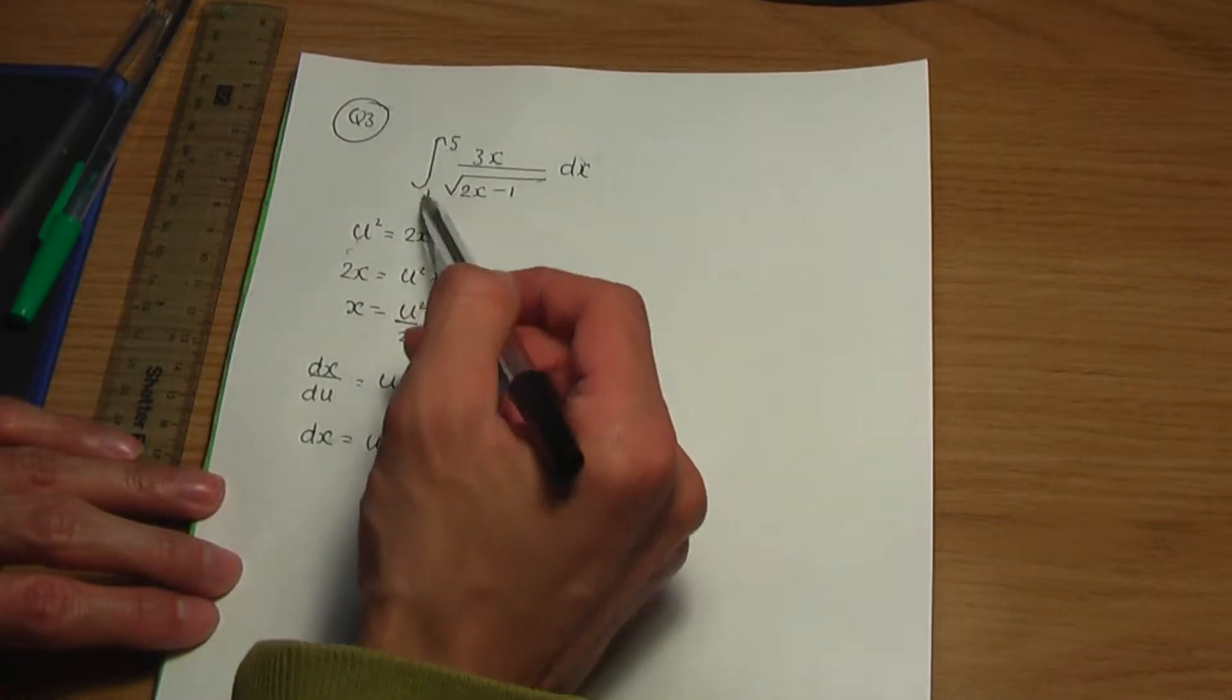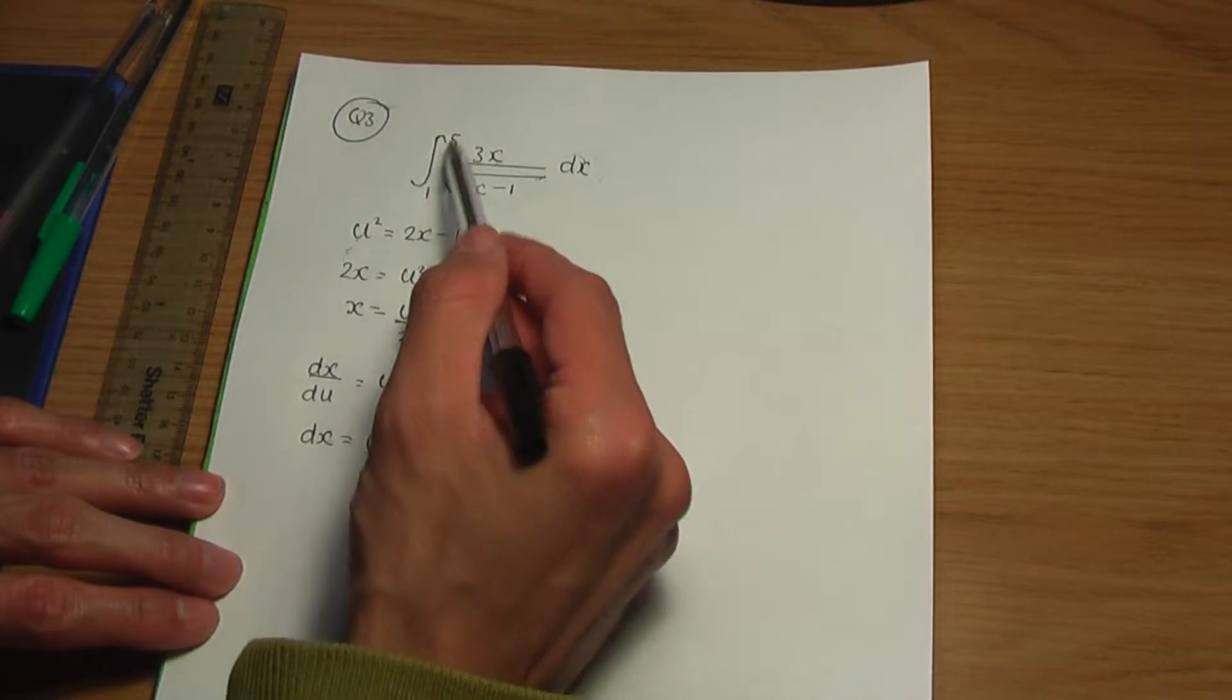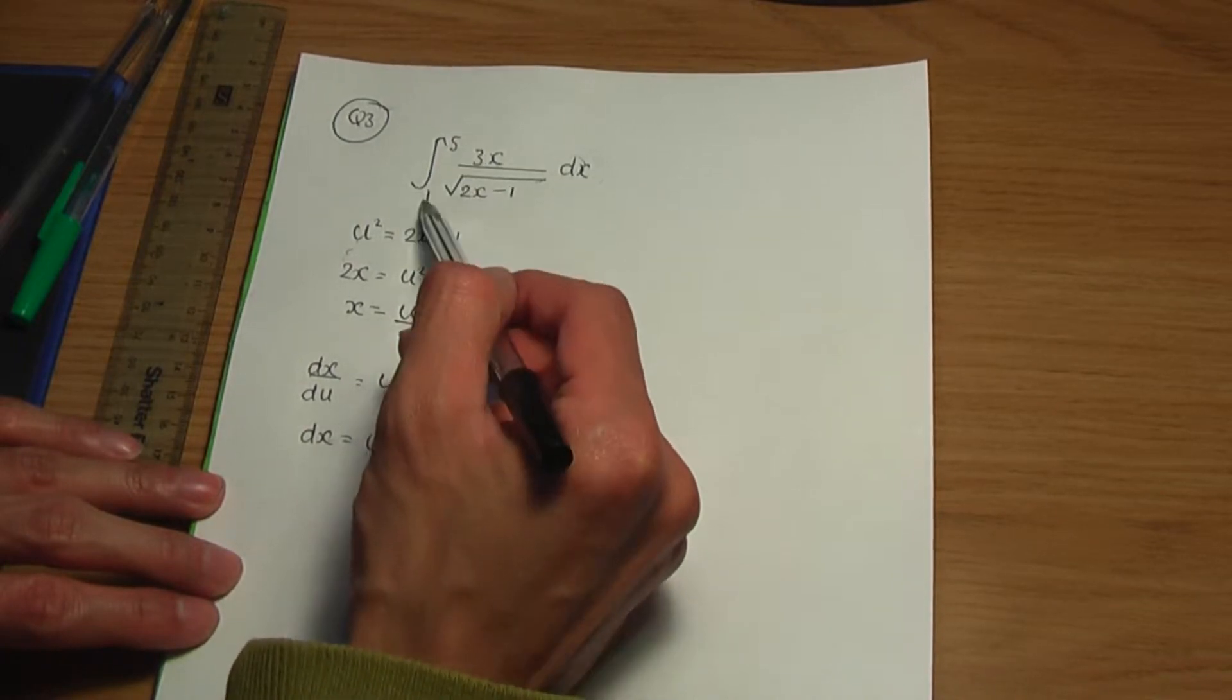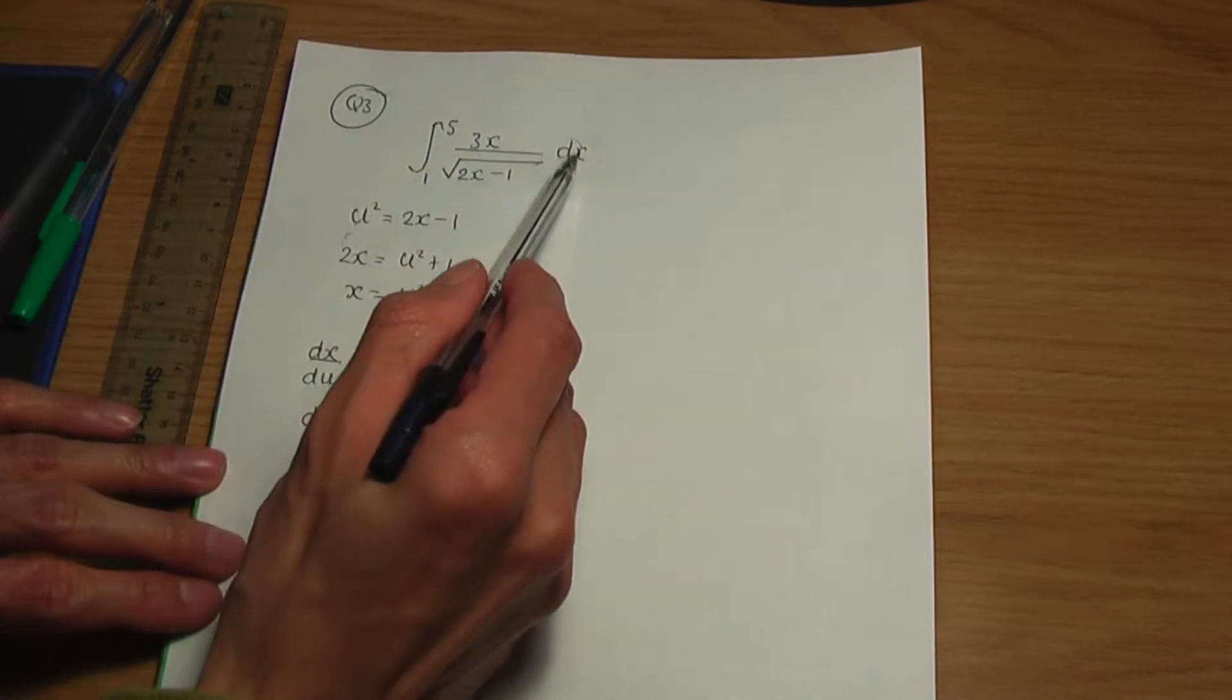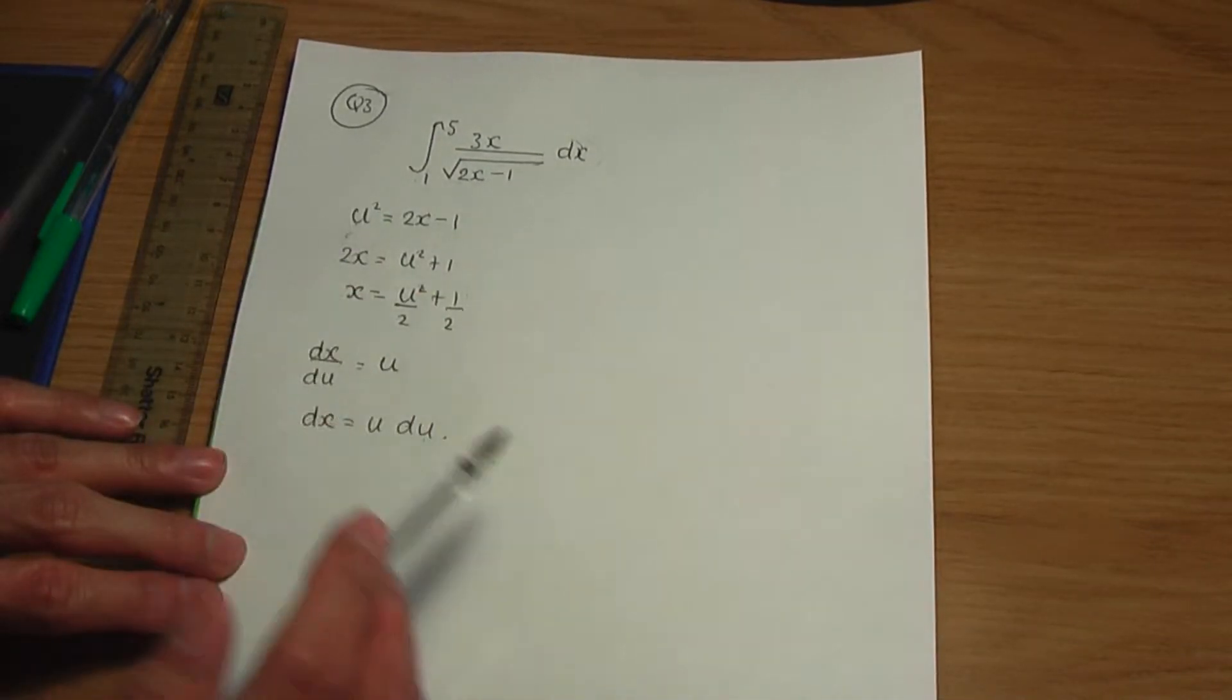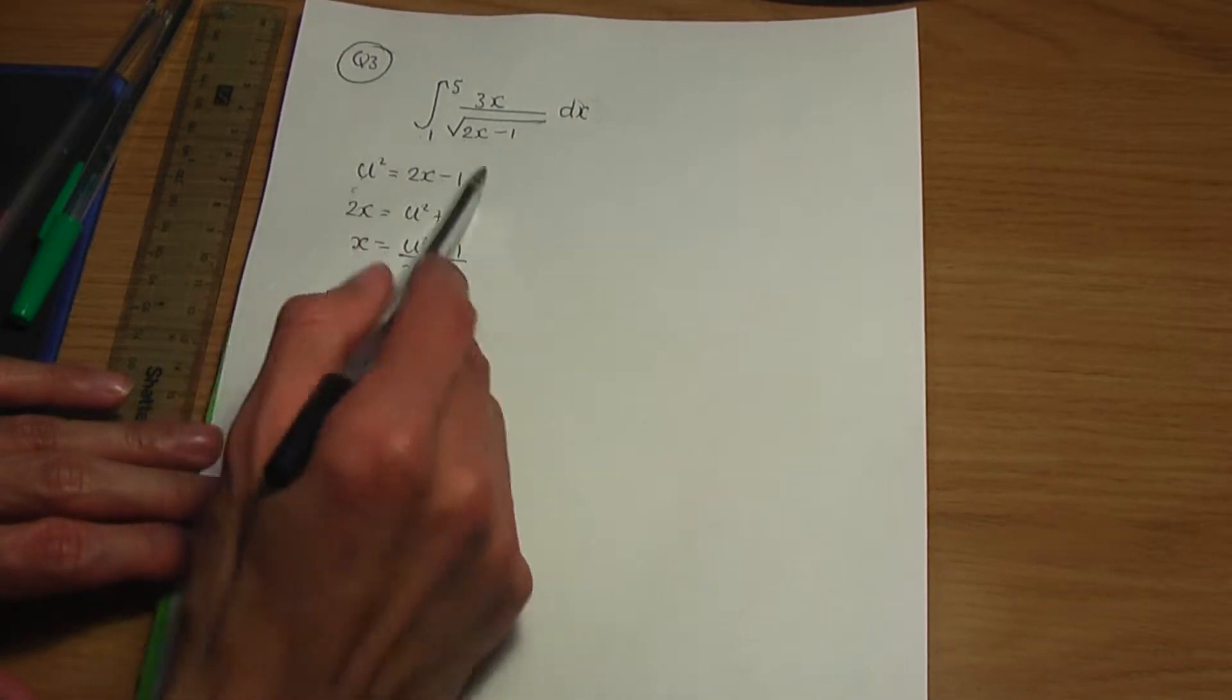However, we have limits. And we need to work out the new limits. These are going to be the new limits with respect to u. These limits refer to the limits for x. Let's work out the new limits. To work out the new limits, we need to use a substitution.